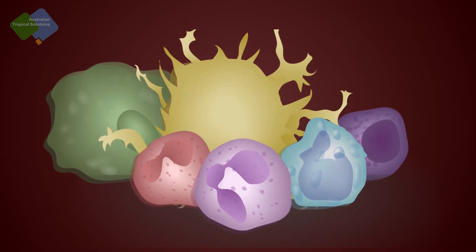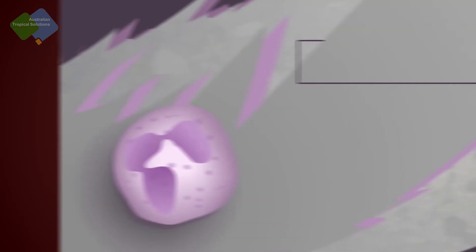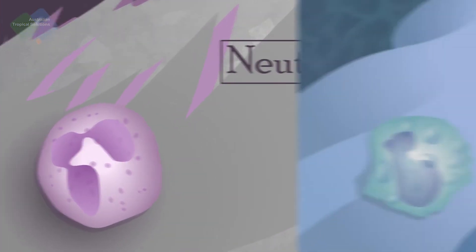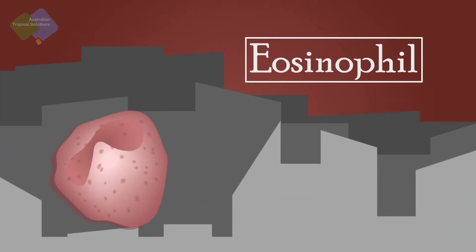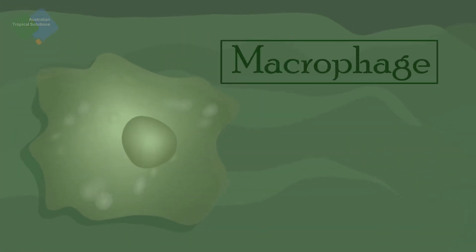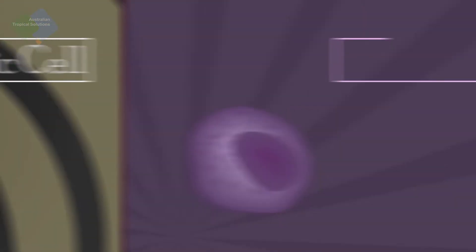The immune cells, which are part of the first line of defense, are cells involved in the innate immune response. These are the neutrophils, the basophils, the eosinophils, the macrophages, dendritic cells and the natural killer cells.